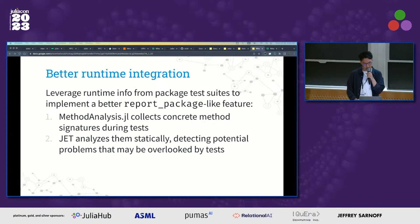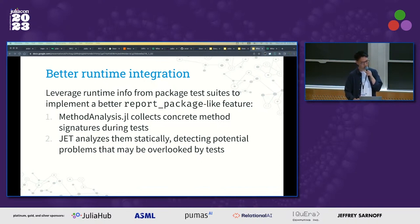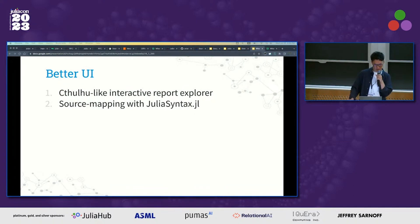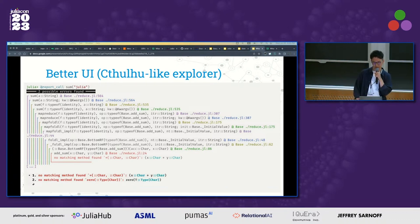Lastly, I'm thinking about how to better utilize runtime information to provide a precise and easy-to-use entry point for package analysis. The idea is to execute a test suite of a package and collect method call signatures using MethodAnalysis.jl, and then reanalyze them statically using JET. This can be a package analysis entry point that is handy to use like `report_package`, but more accurate, because it takes advantage of concrete method signatures that only appear at runtime. There are also some ideas for UI improvements — one thing I would like to implement is a Cthulhu-like interactive report explorer, where you click where an error is reported and it drops you into a Cthulhu view to investigate the code.